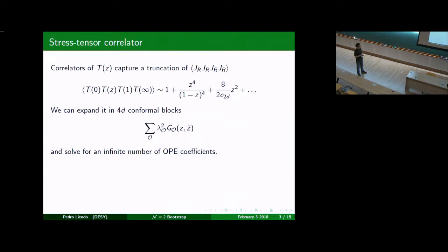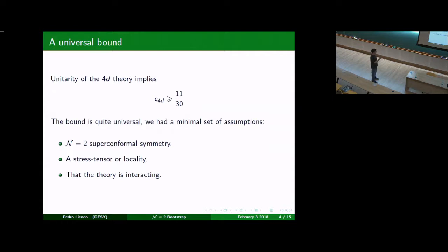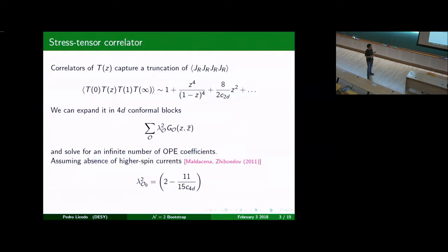I solved a slice thanks to the construction that Maddalena just introduced. Then I can use this solution, expand it in four-dimensional blocks, and solve for OPE coefficients — mimicking the previous talk. Unitarity of the four-dimensional theory implies an analytic bound for the central charge. The assumptions were minimal: we assumed N equals two superconformal symmetry, the existence of a stress tensor, and that the theory is interacting. Because if the theory is interacting, there are no higher-spin currents, by a theorem of Maldacena and Zhiboedov, and therefore you can solve for this OPE coefficient.